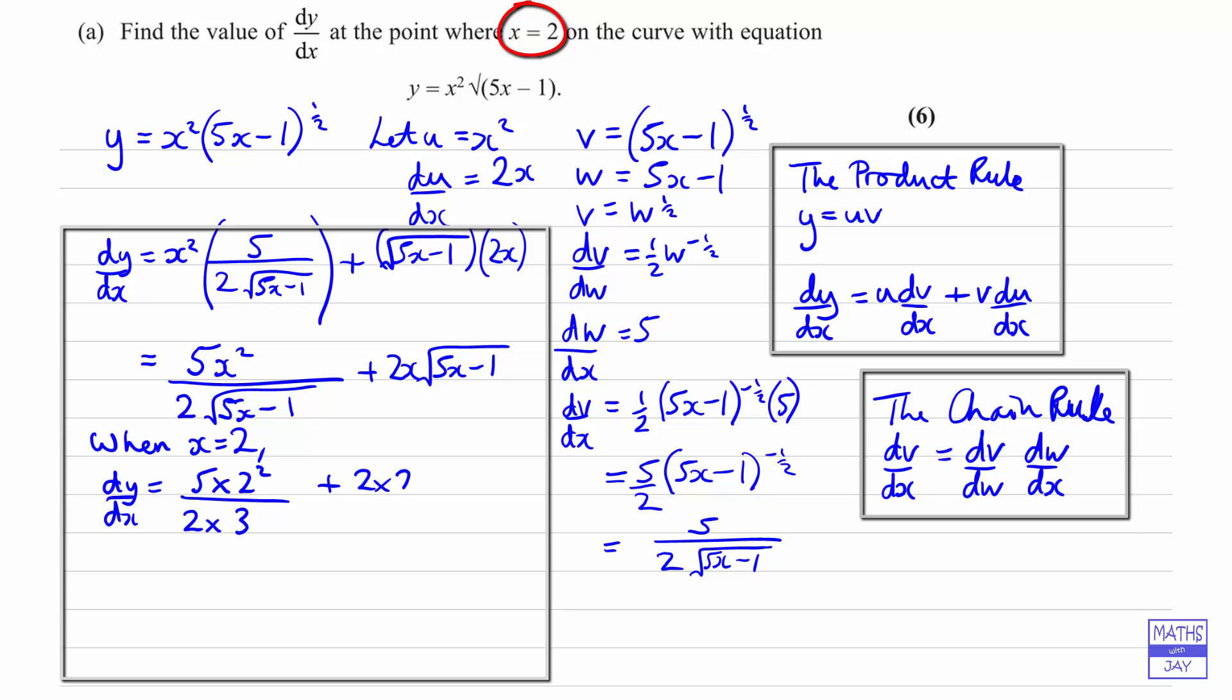And that will then give us 2 times 2. And then we've got the 3 again there. So we've got 5 times 2 over 3, so that's 10 over 3, plus 4 times 3, so plus 12. 12 and 12 is 36 over 3, so that will be 46 over 3.